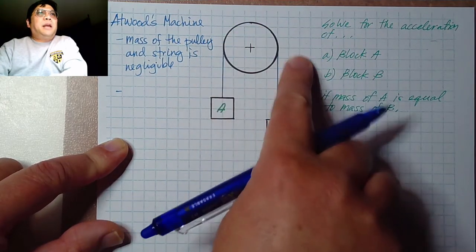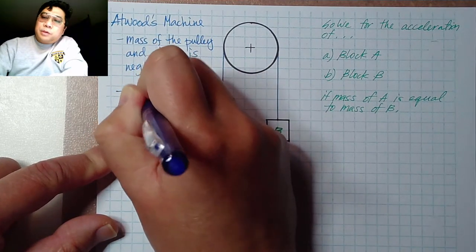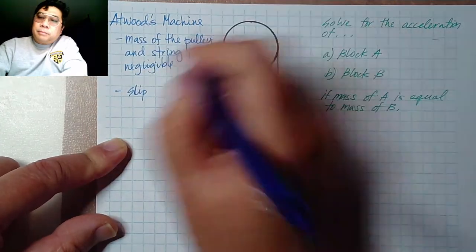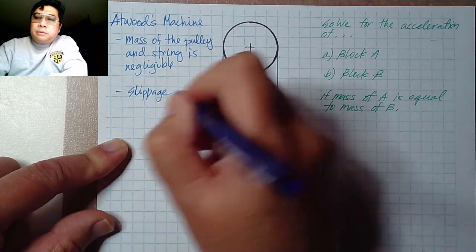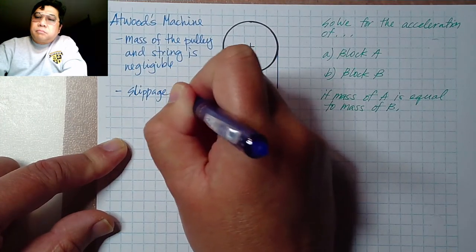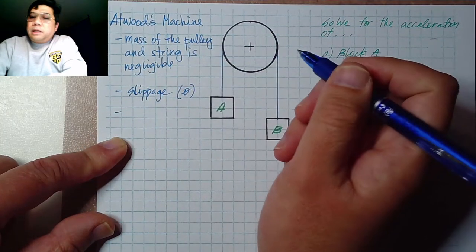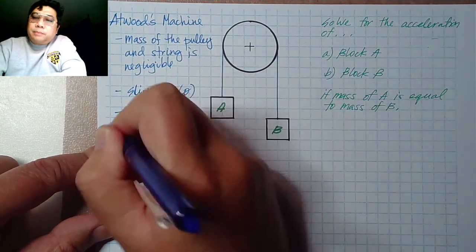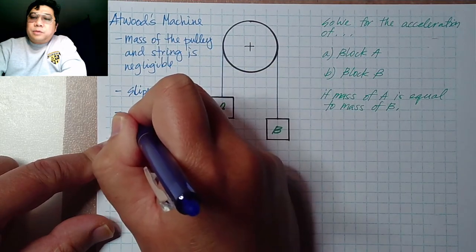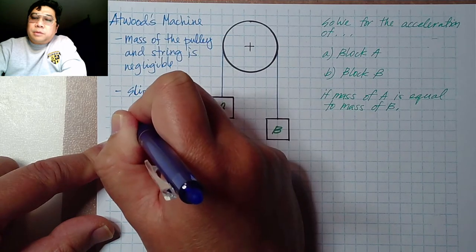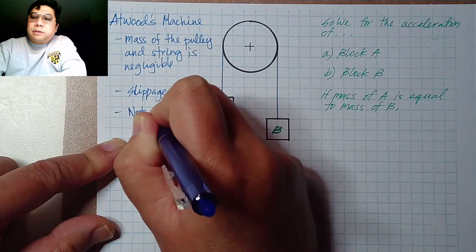Second: there's no slippage along the pulley between the pulley and the string — no slippage, which is equal to zero. And last but not least: no deformation on the string — it does not stretch.